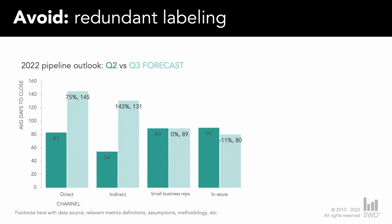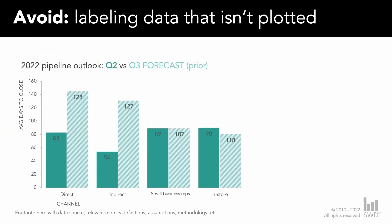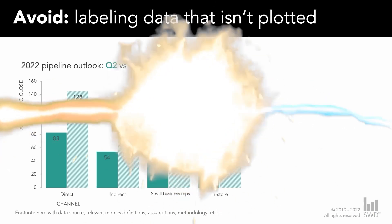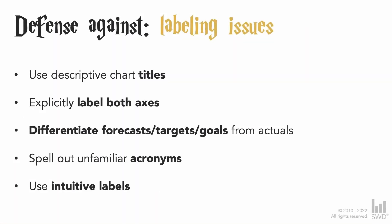Another thing worth saying: avoid labeling data that is not plotted. Which sounds funny, but I actually received a graph like this in my prior banking days where the data plotted was the current forecast, but the numeric data labels shown were from the previous forecast. That took me forever to figure out. So just don't do that — make sure that if you're labeling things, they align to what is actually being shown. We're starting to dip into 'overcomplicating' territory, which is where we're headed next. But first, let's recap how to arm ourselves against labeling issues.